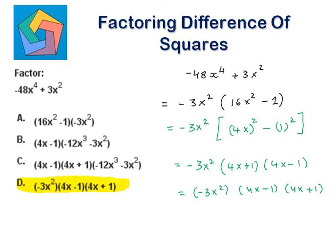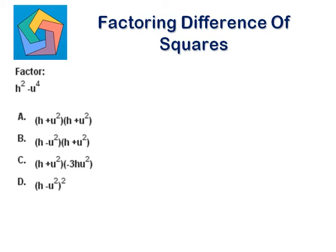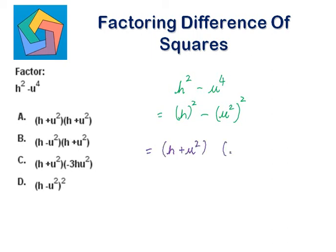Next problem: factor h squared minus u to the power 4. h squared can be written as h whole squared, and u to the power 4 can be written as u squared to the power 2, since 4 equals 2 times 2. So this is equal to h plus u squared times h minus u squared, which is the answer shown in part b.